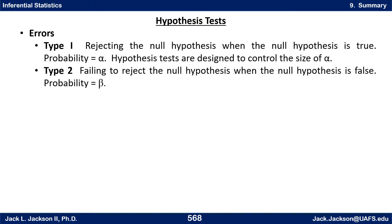There are two types of errors we could make with hypothesis tests. A type 1 error is rejecting the null hypothesis when it is actually true; it has probability alpha, and hypothesis tests are designed to control alpha — typically 0.1, 0.05, or 0.01, though any value is possible. A type 2 error is failing to reject the null hypothesis when it is false; it has probability beta. One minus beta is called the power of the test.